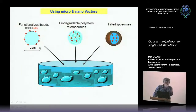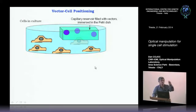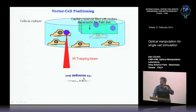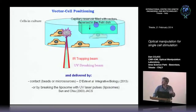We discussed three examples: functionalized beads, biodegradable polymers, and filled liposomes. Before that, how do we manipulate the vectors? We attach molecules to the vectors, then bring the vectors from a capillary reservoir using optical tweezers to the cell, and deliver them by contact. It may be enough that surface molecules on the bead contact the membrane, or in the case of liposomes, we break the membrane and release the molecules.